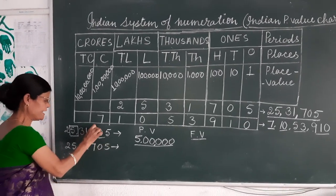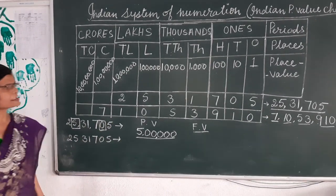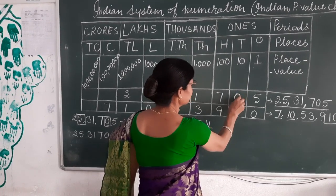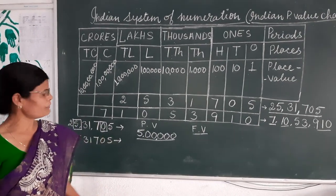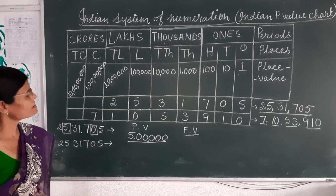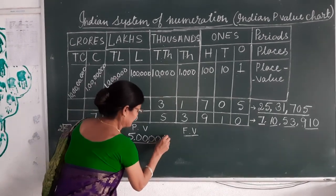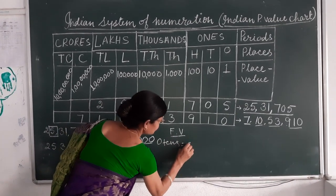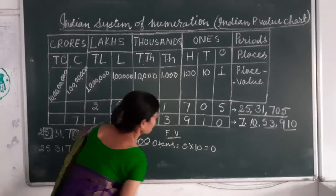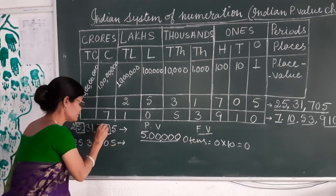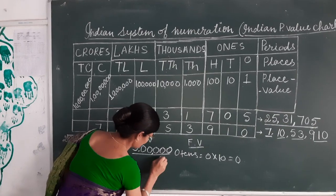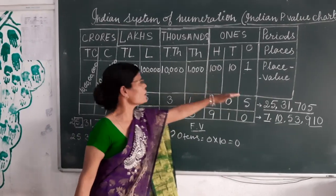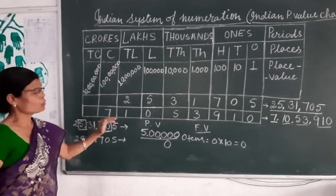Another question: what is the place value of 0? 0 is in the Tens place. That means 0 multiplied by 10 equals 0. We know any number multiplied by 0 equals 0. So we can say the place value of 0 everywhere is 0. The place value of 0 in every place — whether it is in the Ones place, Lakhs place, or Crores place — it would always be 0.